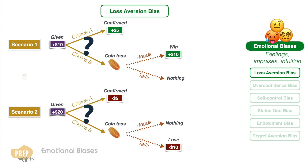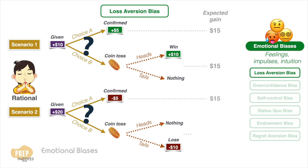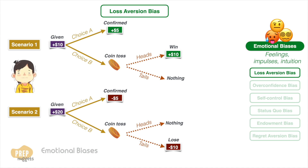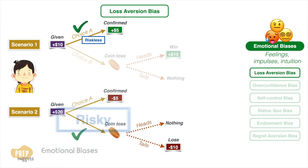If you study all the options rationally, the expected value of your wealth is fifteen dollars for every scenario and every option, so a rational investor would be indifferent to either choice in either scenario. However, in a study conducted by Kahneman and Tversky in 1973, most participants chose the riskless option in scenario one — to receive an additional five dollars — but most chose the risky option in scenario two — to flip the coin.